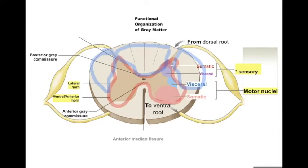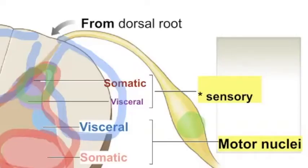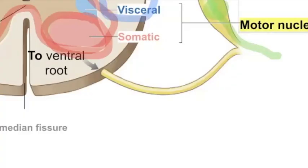Within the gray matter, distinct groups of neurons carrying out specific functions are located in specific regions: the somatic motor nuclei in the ventral horn and interneurons receiving sensory input in the dorsal horn. The actual sensory neurons resided in the dorsal root ganglia outside the spinal cord, and their axons entered through the dorsal root. The axons of motor neurons exited out of the ventral root.